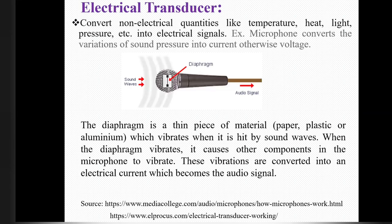We will discuss types of transducers. First is electrical transducers. This electrical transducer converts non-electrical quantities like temperature, heat, light, and pressure into electrical signals.